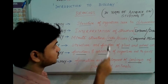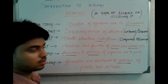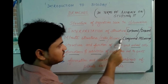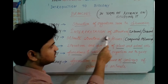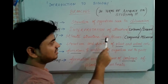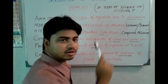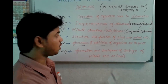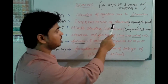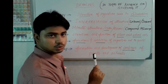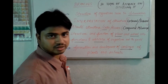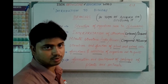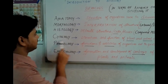Next is histology. As we have read earlier, cells are the smallest unit of a living organism. A group of cells performing a similar activity is called a tissue. These cells and tissues can only be observed under a compound microscope. So histology is the study of the minute structure of cells or tissues under the microscope.